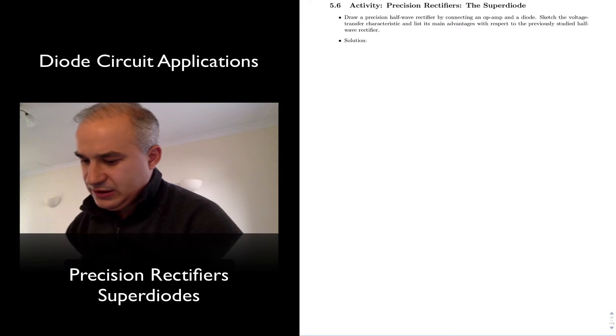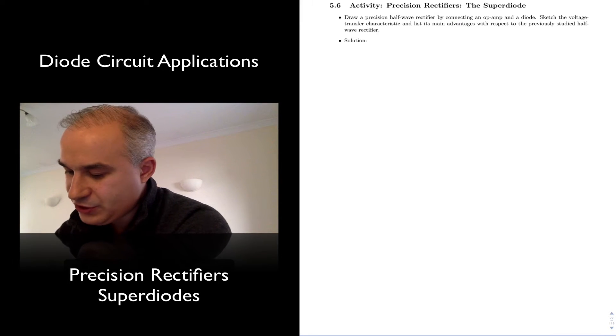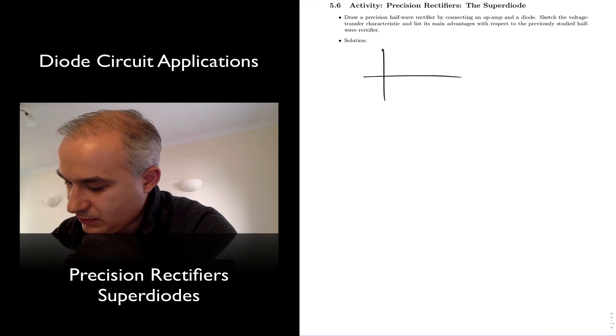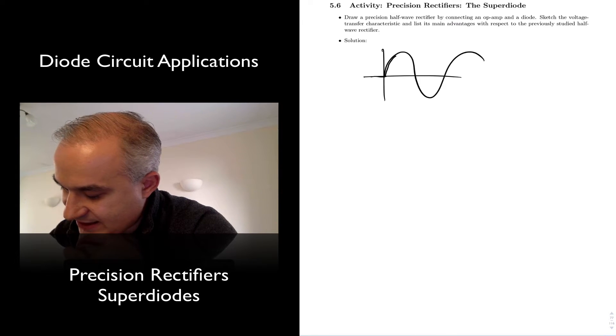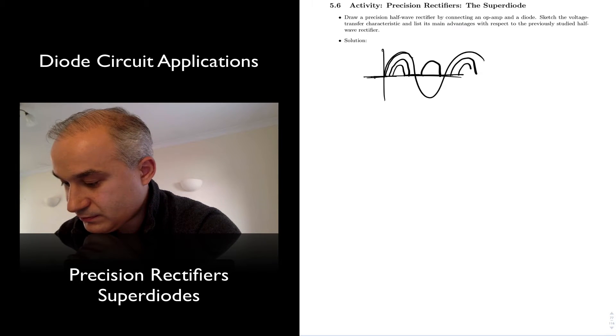If you recall from the half-wave rectifier video, what we saw is that in the half-wave rectifier, the output was not exactly the input, but you had a diode drop, something like this. In the full-wave rectifier, you had two diode drops.